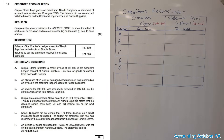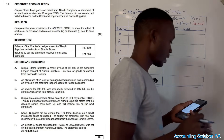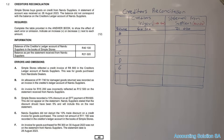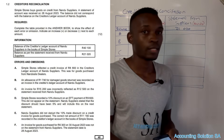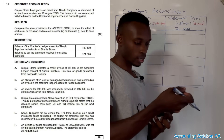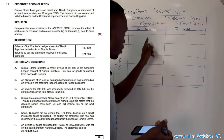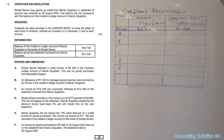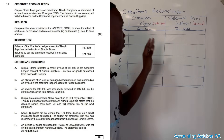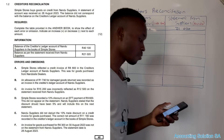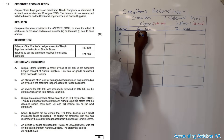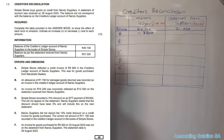Number A — errors and omissions: Simple Store reflected a credit invoice of 8,800 in the creditors ledger account of Nardu Supplier, but this was a goods purchase from Rosilla Dealers, which is a third party. Our business made a mistake and recorded an invoice that increased liability when it shouldn't have. Because this belongs to Rosilla Dealers separately, this amount must be subtracted — minus 8,800.